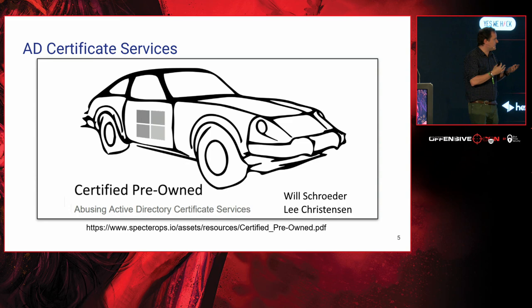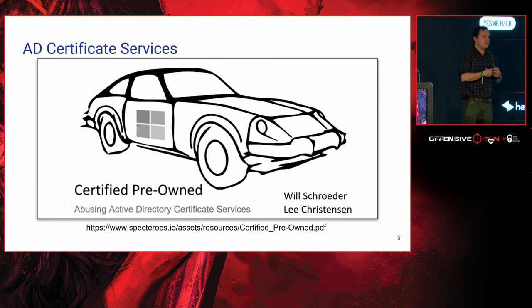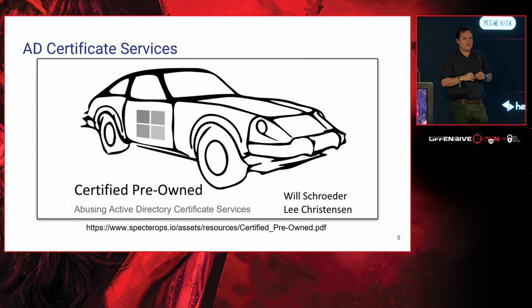Last year there was interesting research from SpectreOps by Will Schroeder and Lee Christensen about Active Directory Certificate Services — a service you can deploy on a Windows domain to act as a certificate authority. A web server can issue X.509 certificates for user authentication. It turns out this web server was by default vulnerable to NTLM relay. If you could relay a domain controller to the ADCS web server, you could get a certificate to impersonate that domain controller anywhere on the network — generally considered a bad thing.